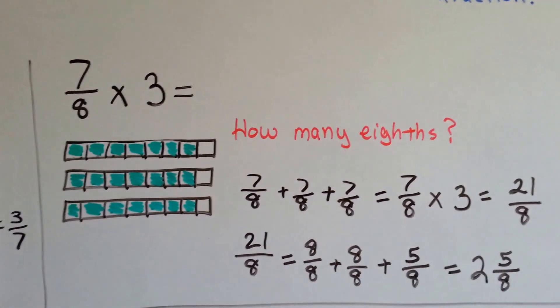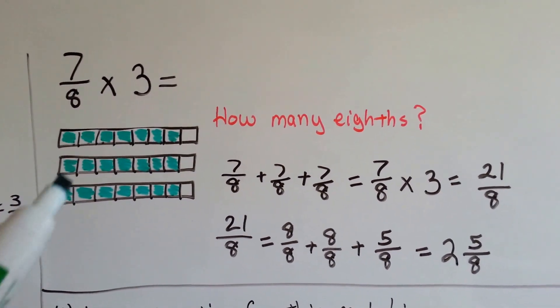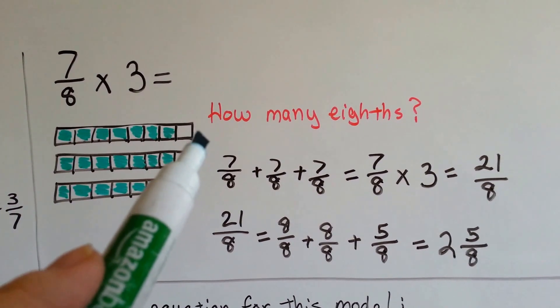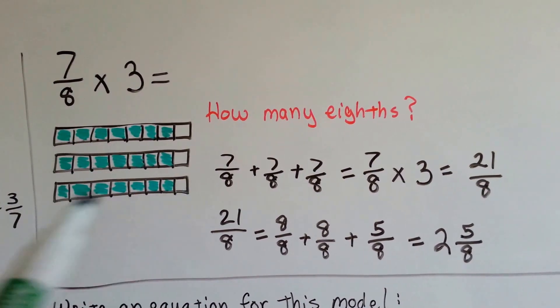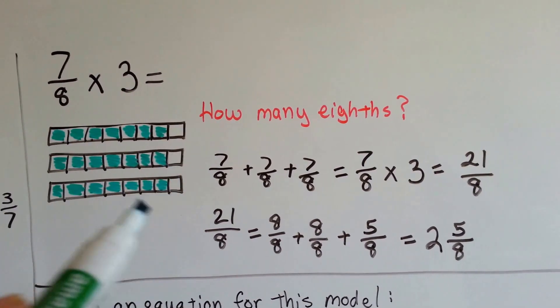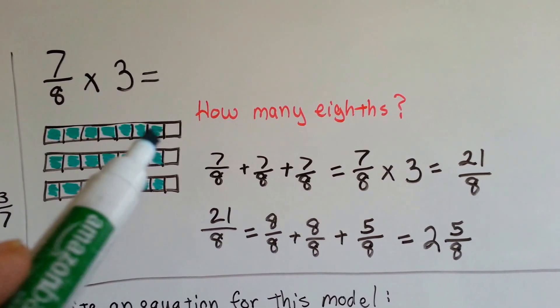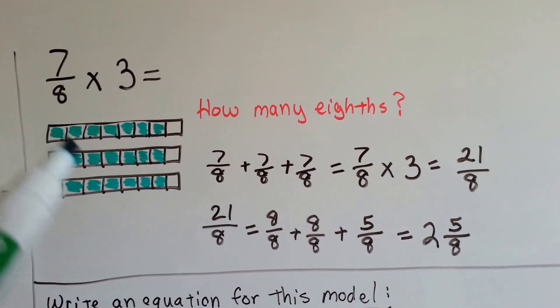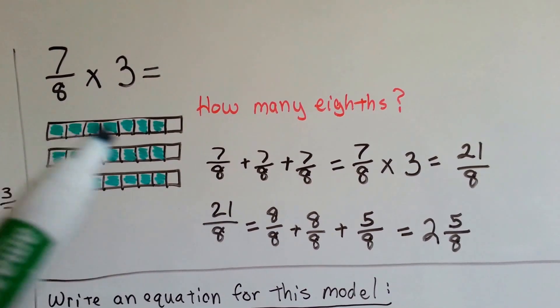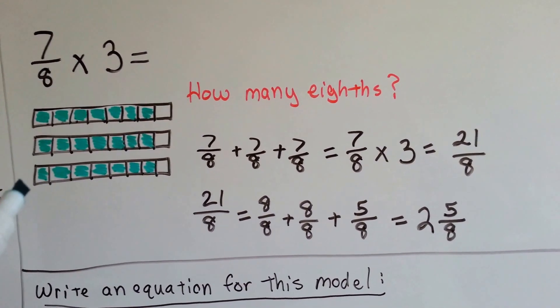Now, if we have this one, seven-eighths times three, we've got three bars that are split into eighths. And the reason we pick eighths is because that's what the denominator is. We filled each one seven times. So seven-eighths of each bar was filled in.